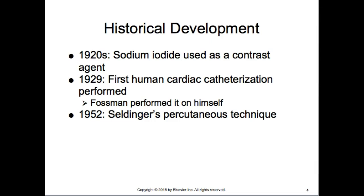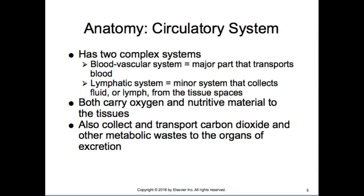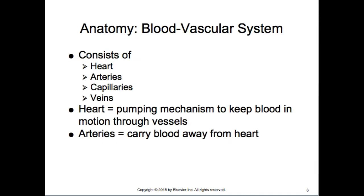In 1952, the Seldinger percutaneous technique came into play, and we still use that technique today. The circulatory system has two complex systems: the blood vascular system and the lymphatic. Both carry oxygen and nutritive material to the tissues, and collect and transport carbon dioxide and other metabolic waste to organs of excretion.